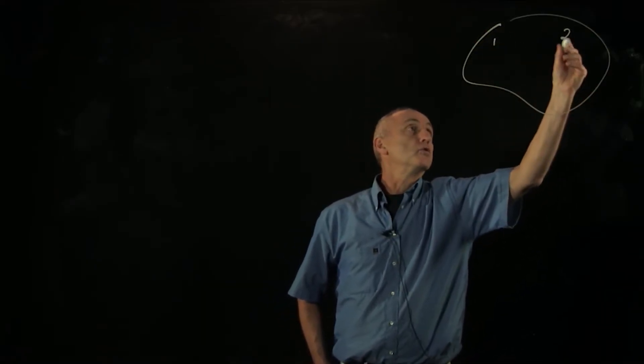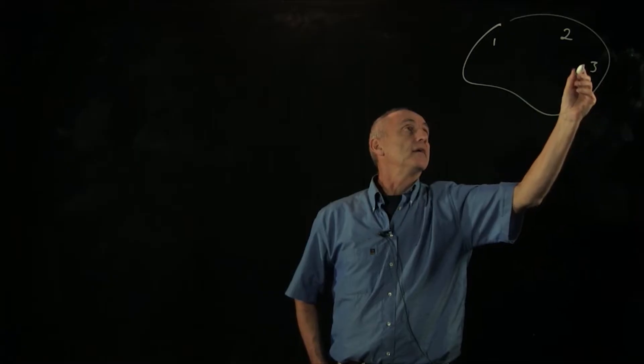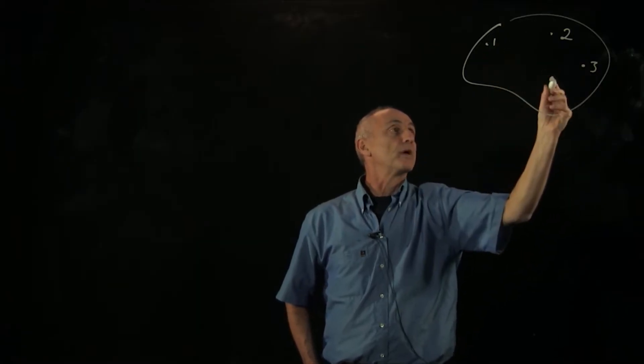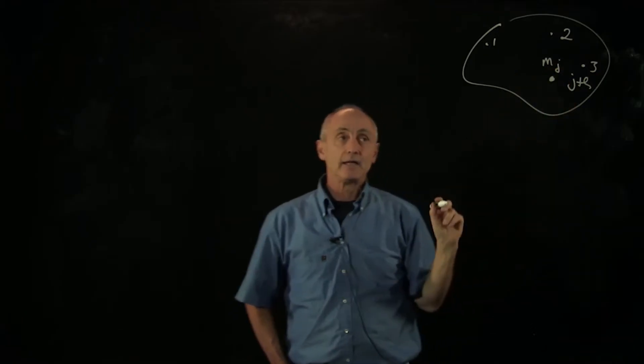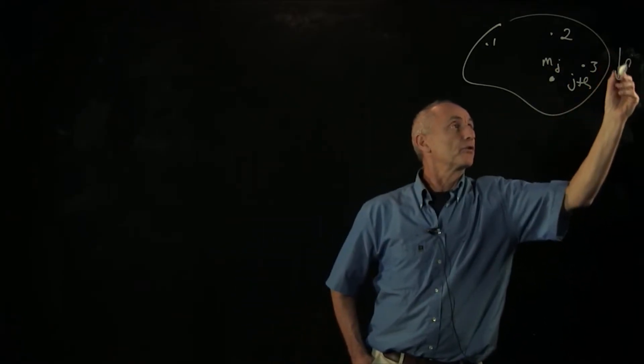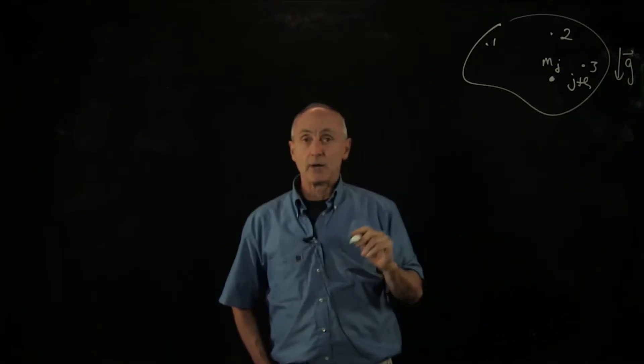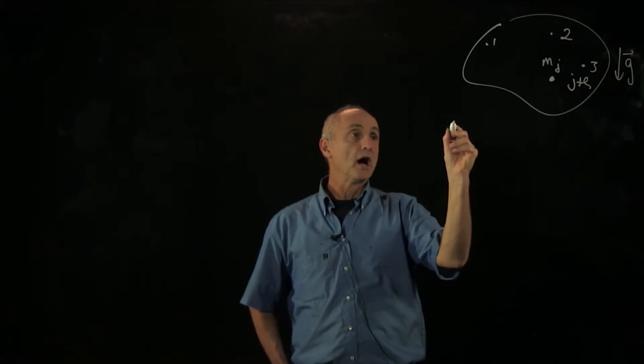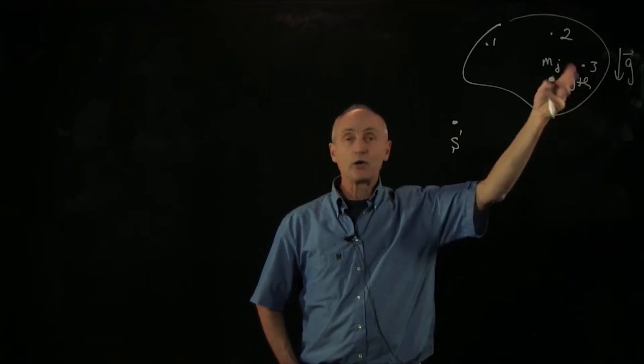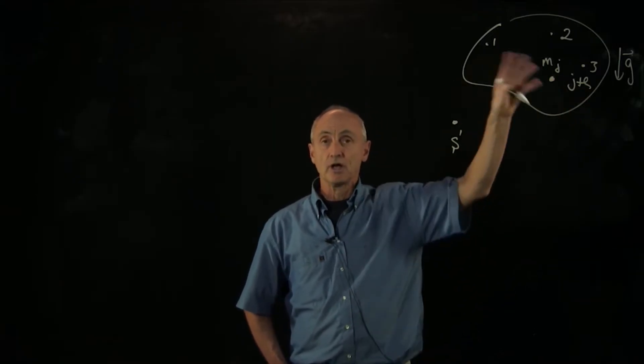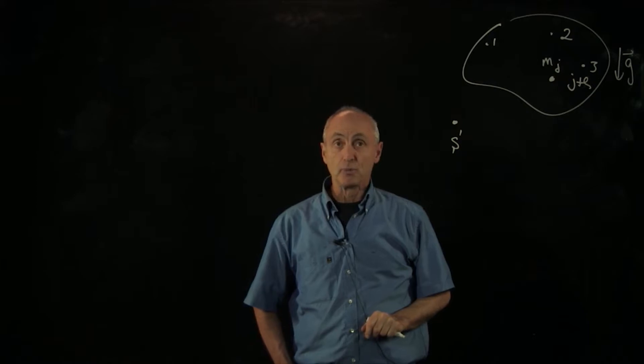We would now like to consider a system of particles. Let's draw them as 1, 2, 3, and let's refer to this one as the j particle of mass mj. These particles, this system of particles, is in a gravitational field. I would like to consider the torque about some point s for this system of particles. In particular, I'd like to know how do I treat the gravitational force that's acting on all of these individual particles?